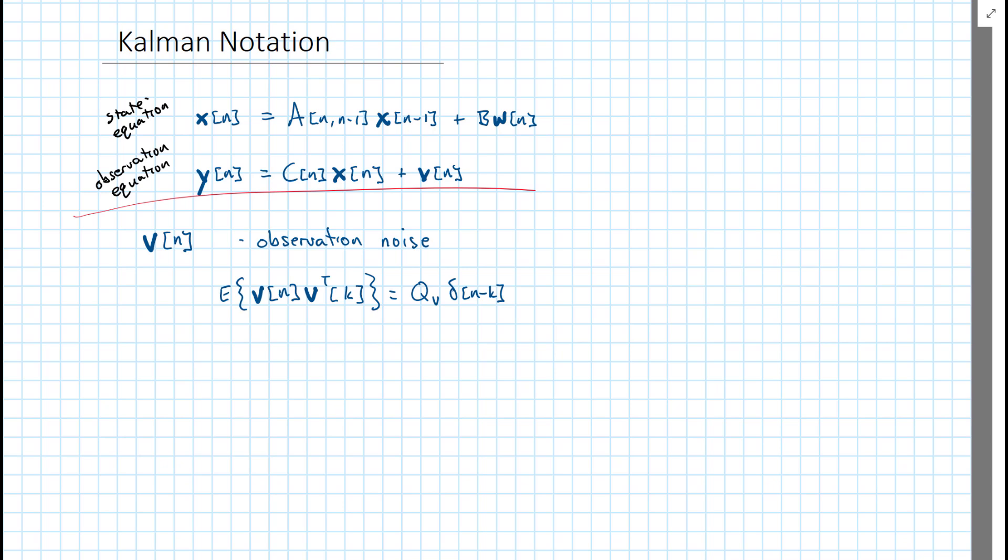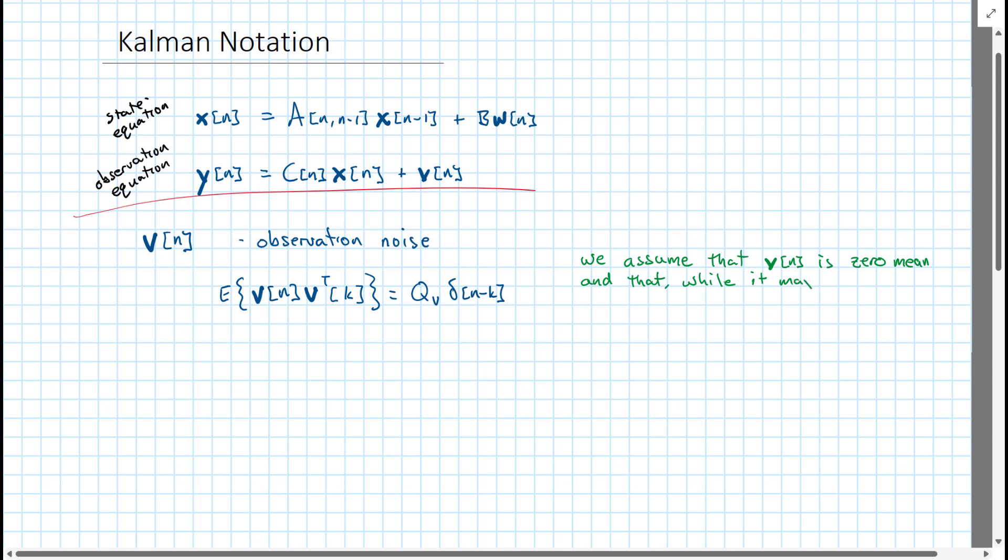Hence the delta n-k in the expression below. So what does it mean to be uncorrelated from time to time but have internal correlations? That means that the Q matrix is not necessarily the identity matrix.